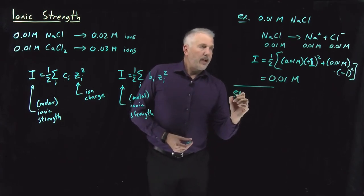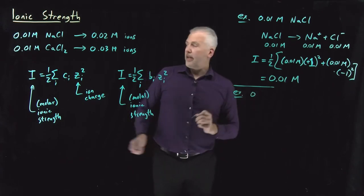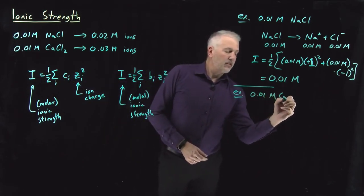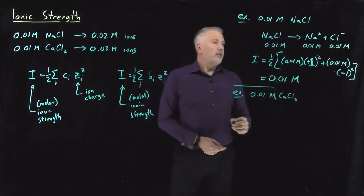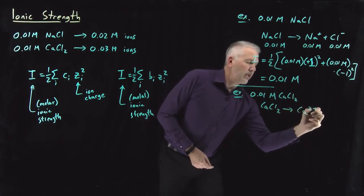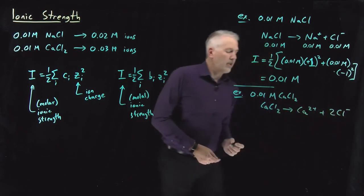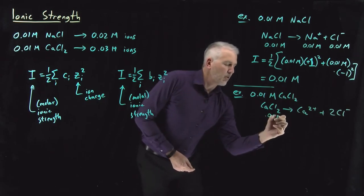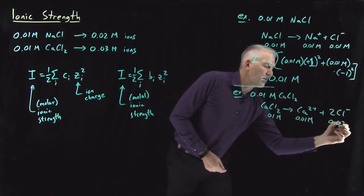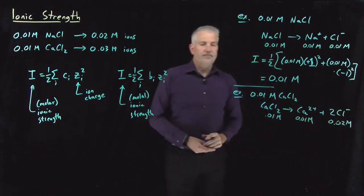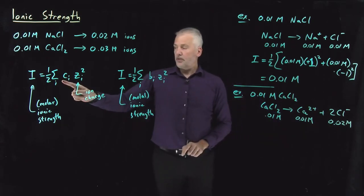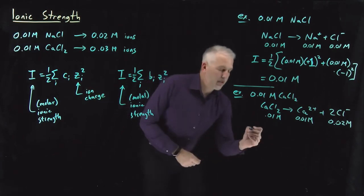Things work out a little differently for calcium chloride. For a 0.01 molar solution of calcium chloride, being explicit about the stoichiometry: it generates a solution that's 0.01 molar in calcium and 0.02 molar in chloride. These are the values we'll use when summing concentrations times charges squared to get the ionic strength.